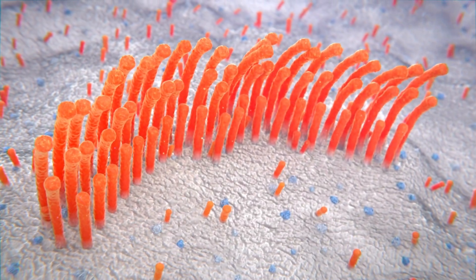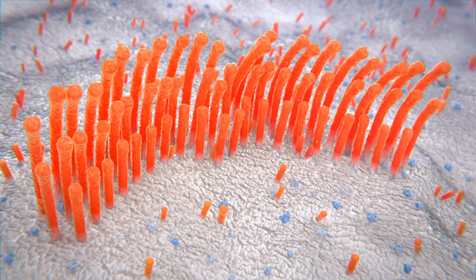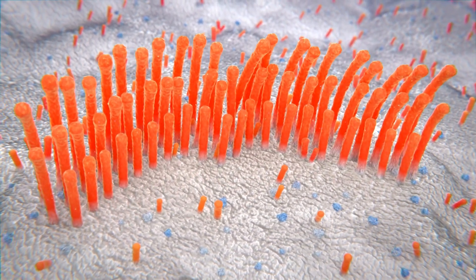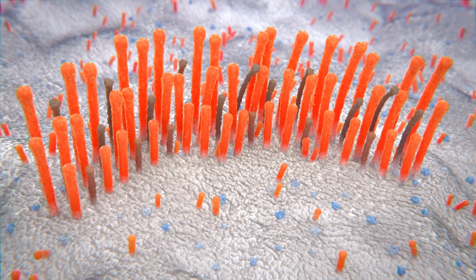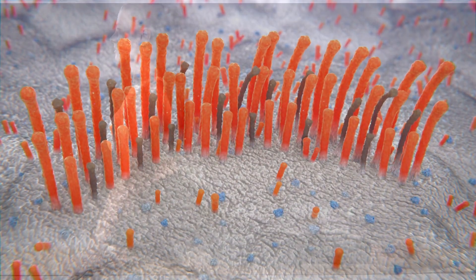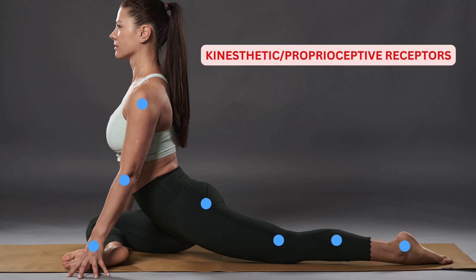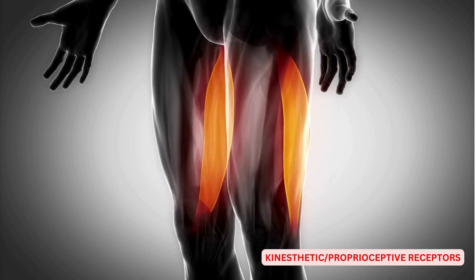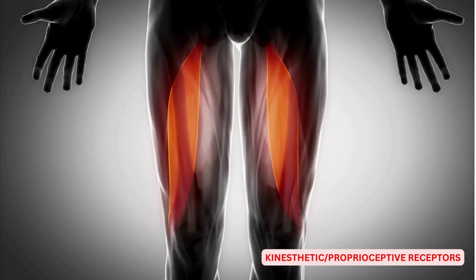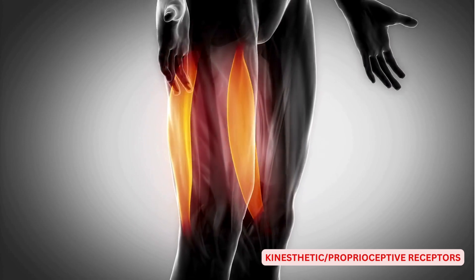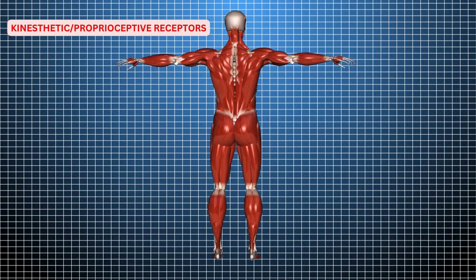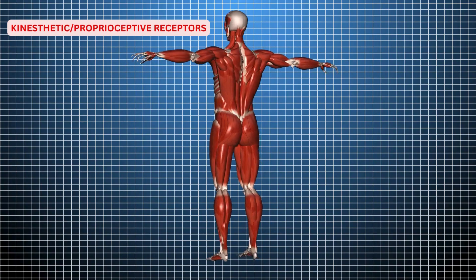Both the semicircular canal and the otolith organ use hair cells to detect angular and linear acceleration respectively. The last component is kinesthetic or proprioceptive receptors. A variety of sensory endings in the skin, joints, muscles and ligaments are stimulated mechanically and are influenced by the forces acting on the body. This is also called the seat-of-the-pants sensation.